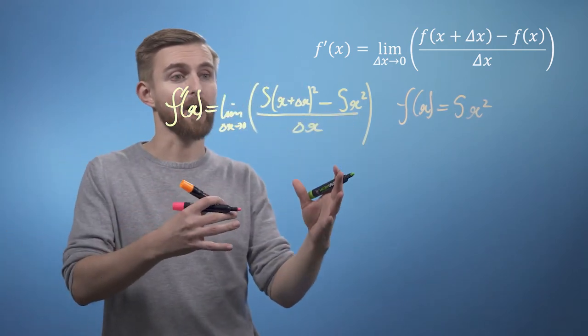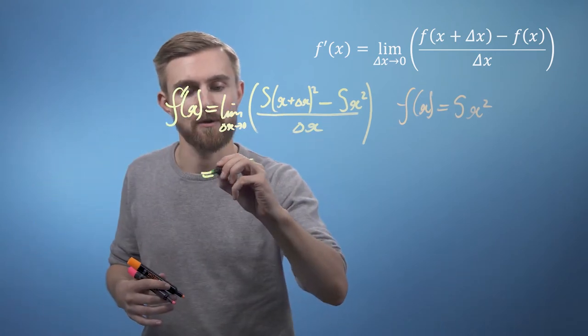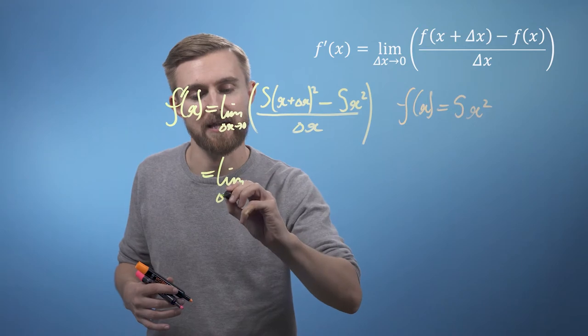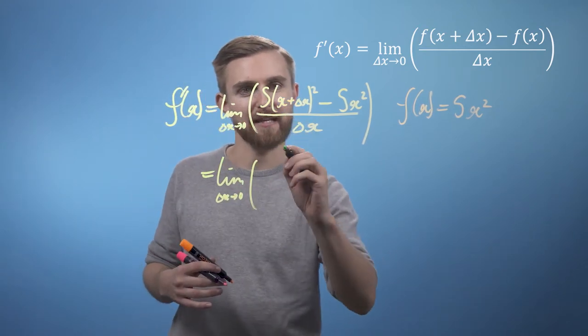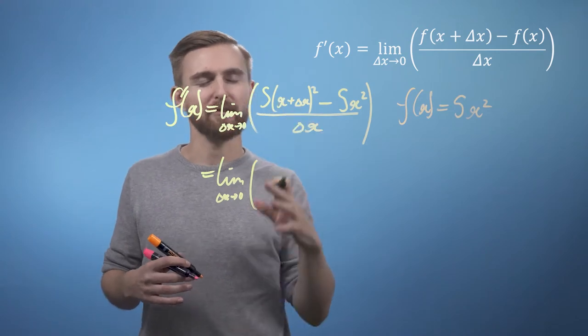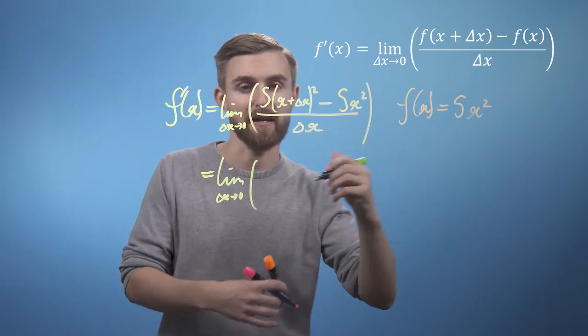And all we're going to do now is work through the algebra and see what comes out the other side. So, equals the limit, once again as delta x goes to 0 of, and let's expand this thing out. So, we're going to think x plus delta x squared, we're going to get x squared plus 2x delta x plus delta x squared.